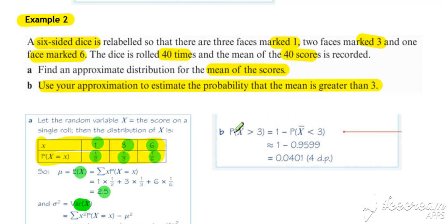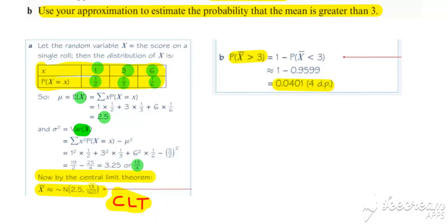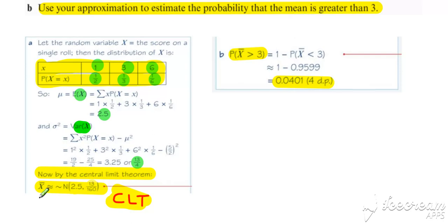So we just now need to work out the probability that x bar is greater than 3, and that's just the usual thing from your calculator with the distribution given below.